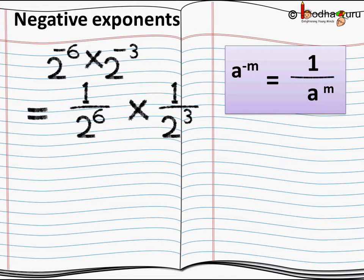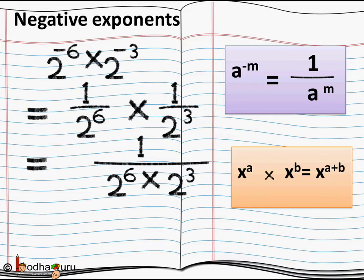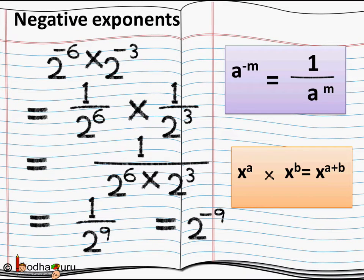Two to the power minus six can be written as one divided by two to the power six. Similarly, two to the power minus three equals one divided by two to the power three. This gives us one divided by two to the power six multiplied by two to the power three. Remembering that x to the power a multiplied by x to the power b equals x to the power a plus b, we simply add the powers: six plus three equals nine. So it becomes one divided by two to the power nine, which equals two to the power minus nine.